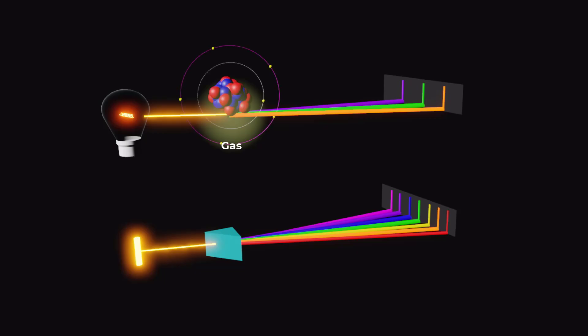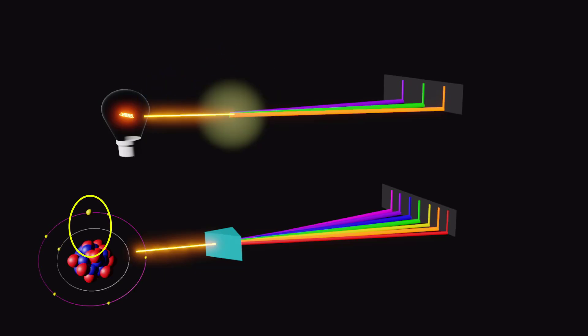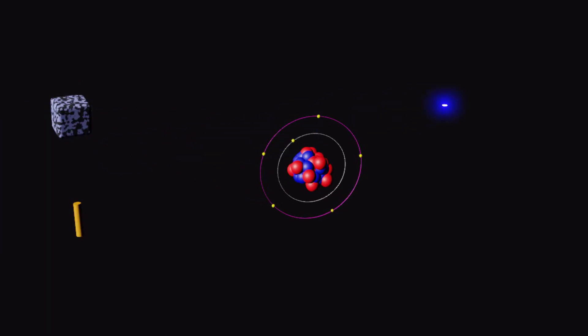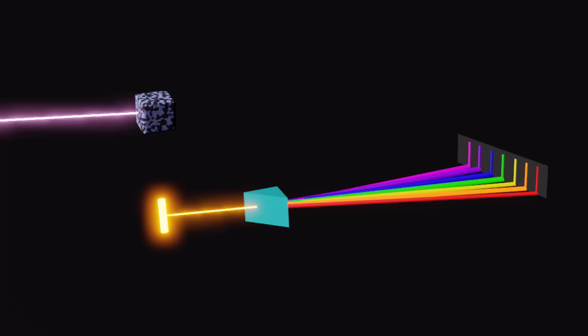Hello and welcome to the video on atomic spectrum. We will take a closer look at different types of spectra and the emission spectrum of hydrogen atom. Matter is made up of atoms, which can absorb and emit energy in the form of light. Each material absorbs and emits a unique set of wavelengths or colors of light, which is called its spectrum.